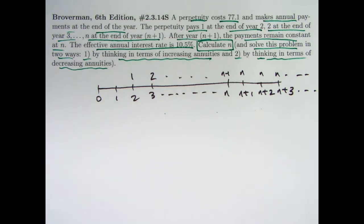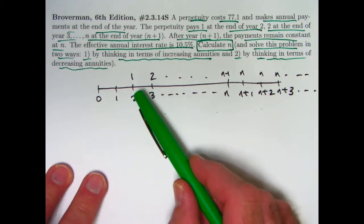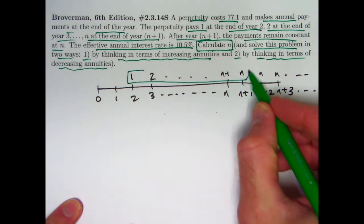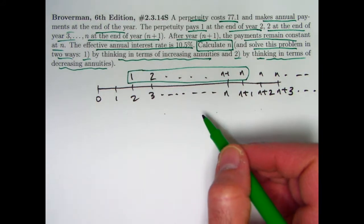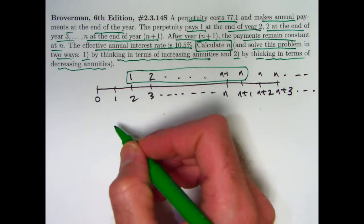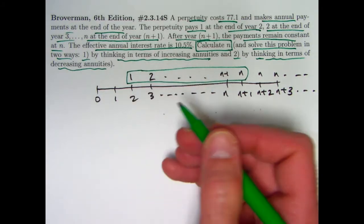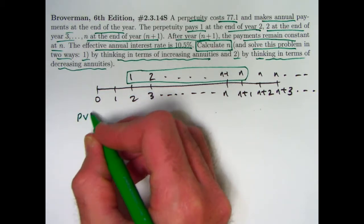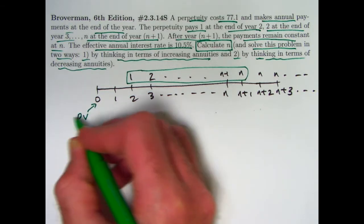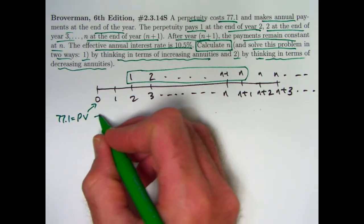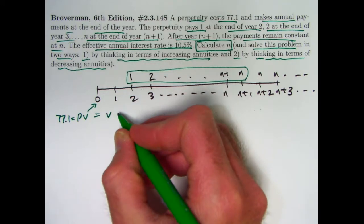And again, in the first approach, we're going to think in terms of increasing annuities. This is an increasing annuity right here. Let's think of it this way. Your basic increasing annuity. If we evaluate its present value one period before the first payment, that would be at time 1, we want to go back to time 0, so we need to discount it. We need to multiply it by V, the present value discount factor.